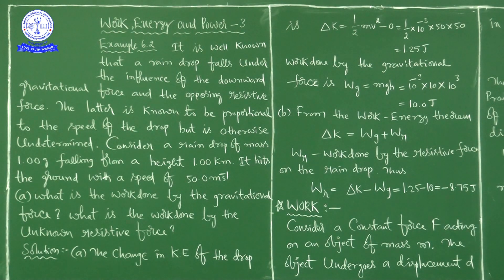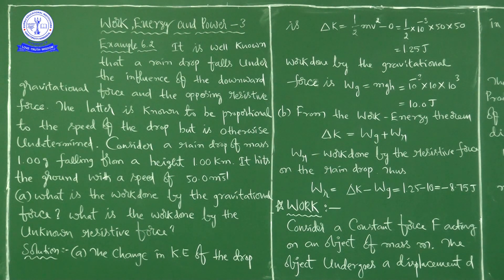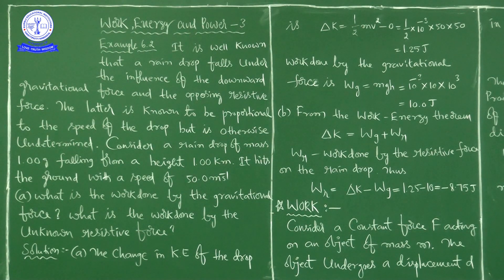The raindrop has a mass of 1 gram, falling from a height of 1 kilometer. It hits the ground with a speed of 50 meters per second. We have to find two things: what is the work done by the gravitational force, and what is the work done by the unknown resistive force.